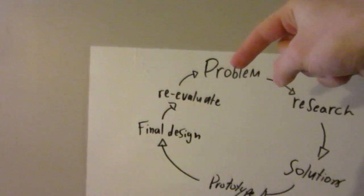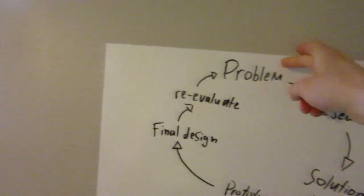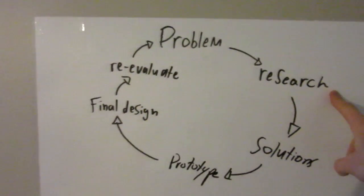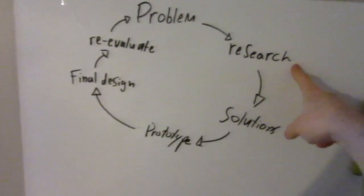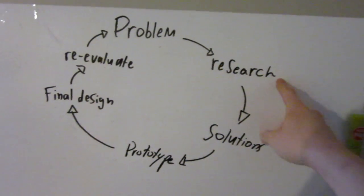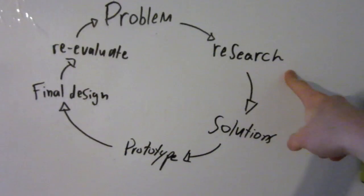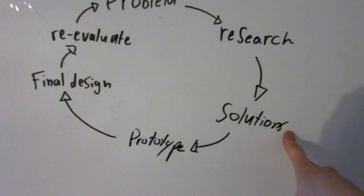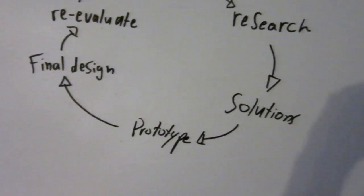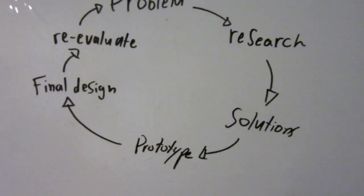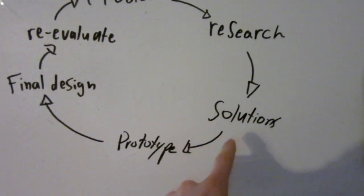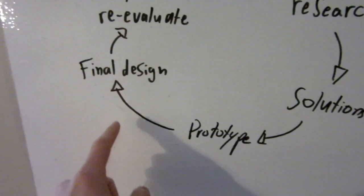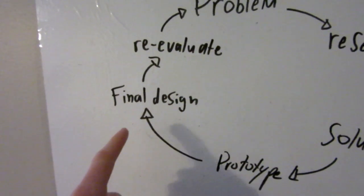Starting up at the top here, you'll usually have a problem, and going into that, you're going to research your problem. Whatever your problem may be, you're going to want to research it, then continuing around the loop, think of possible solutions. From those solutions, construct a prototype, then refine the prototype into a final design.